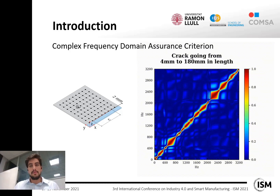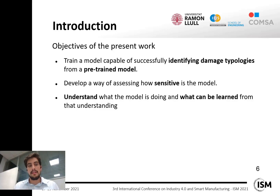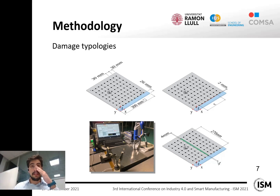That correlation composes a matrix that shows a very particular diagonal pattern that degrades with damage, and each damage type has a very particular degradation pattern which we can use to detect different types of damage on the structure. That is mainly the aim of this work: to train a model capable of successfully identifying damage typologies from a pre-trained model, to develop a way of assessing how sensitive that model is, and to understand what the model is doing. After all, this is a transfer learning application.